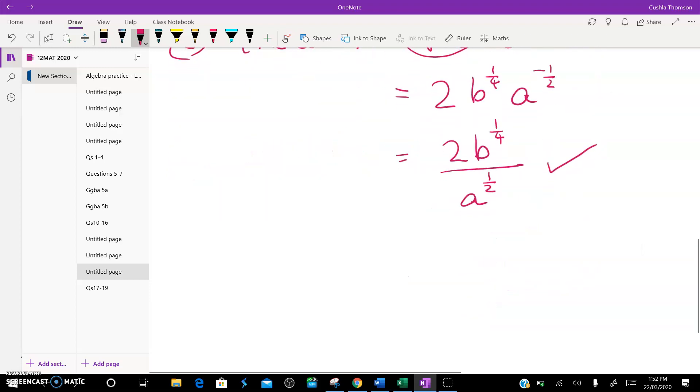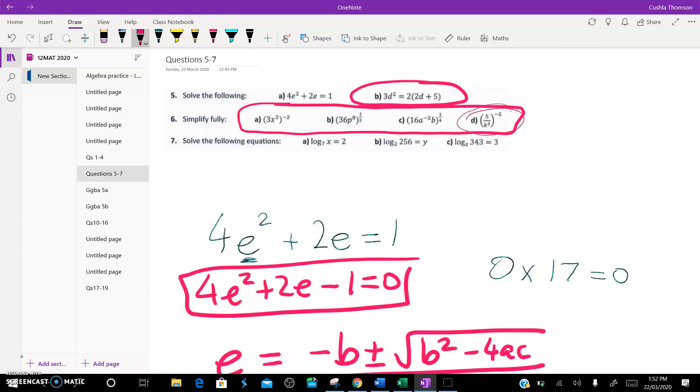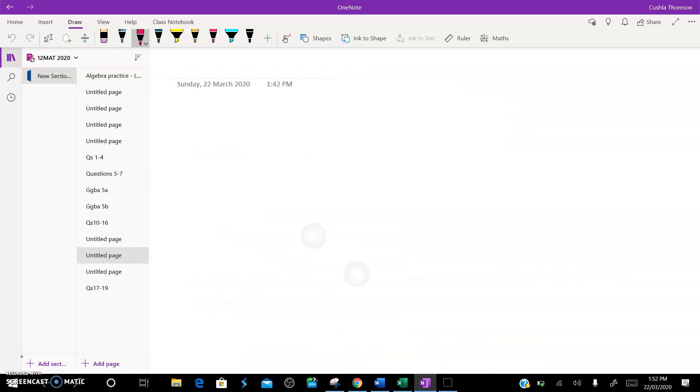The last question in this set of 4 is this one here, which was 5 over k cubed to the power of negative 2. And that's the same as k cubed over 5 squared. Right, when I'm dealing with a negative power, I'm working with the reciprocal. That gives me k to the power of 9, multiplying the powers, over 5 squared, which is 25.